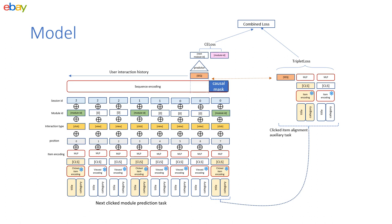Furthermore, to compensate for not knowing the recommended items themselves at inference time, we suggest an auxiliary training over historic user-clicked items that allows better alignment of the module's representation to actual item preferences.